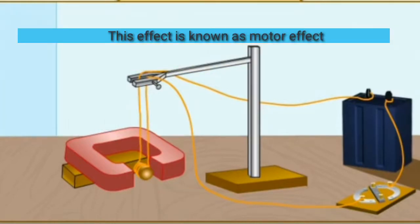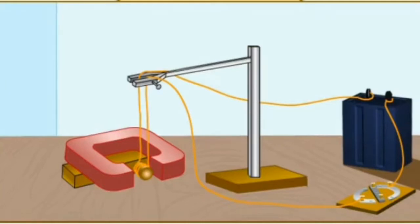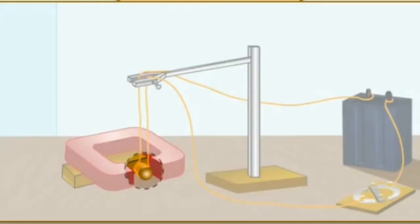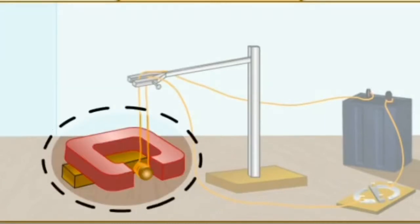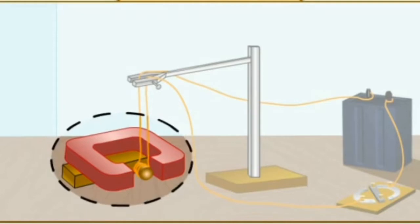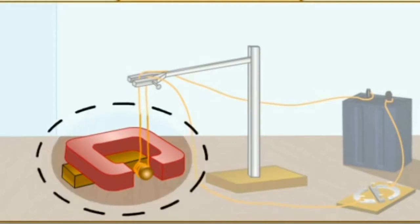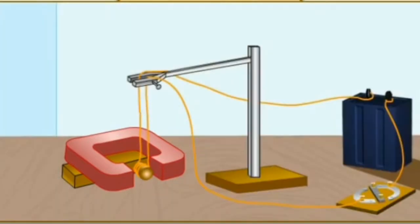Want to watch the motor effect? Wind several turns of wire around a cork and suspend it from a clamp. Place this arrangement between the poles of a horseshoe magnet. Switch on the current. The cork moves.